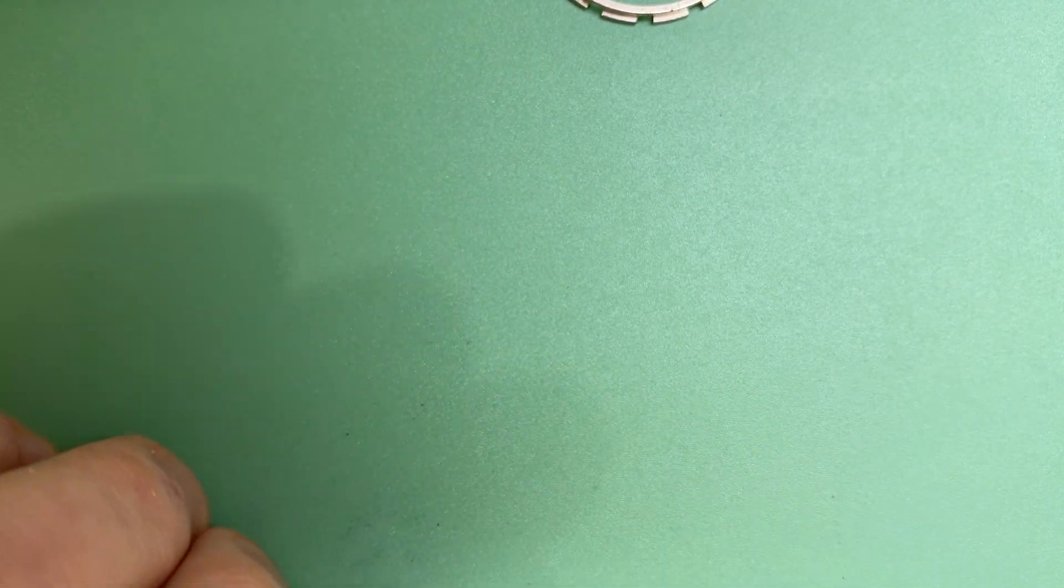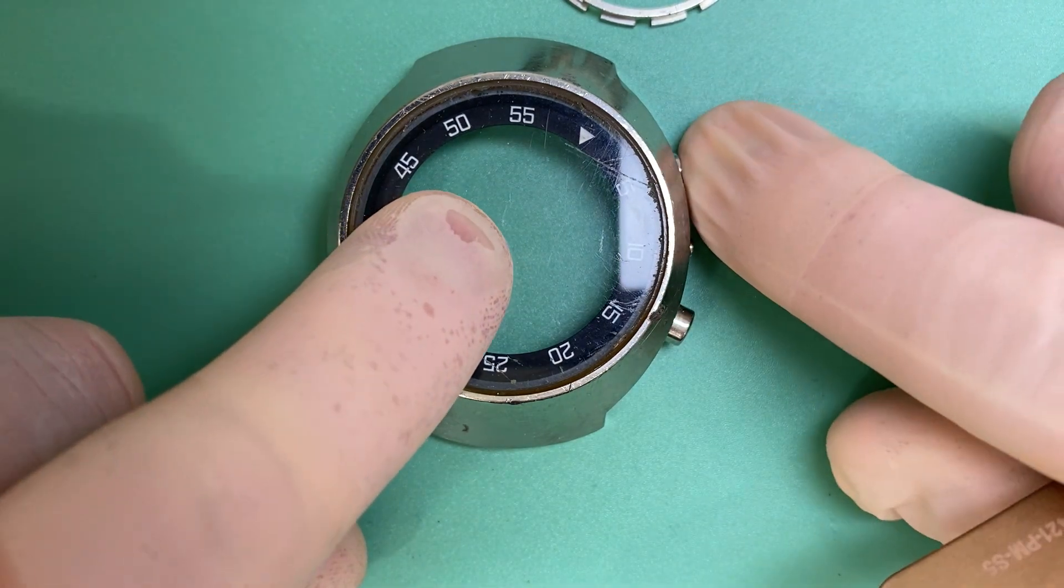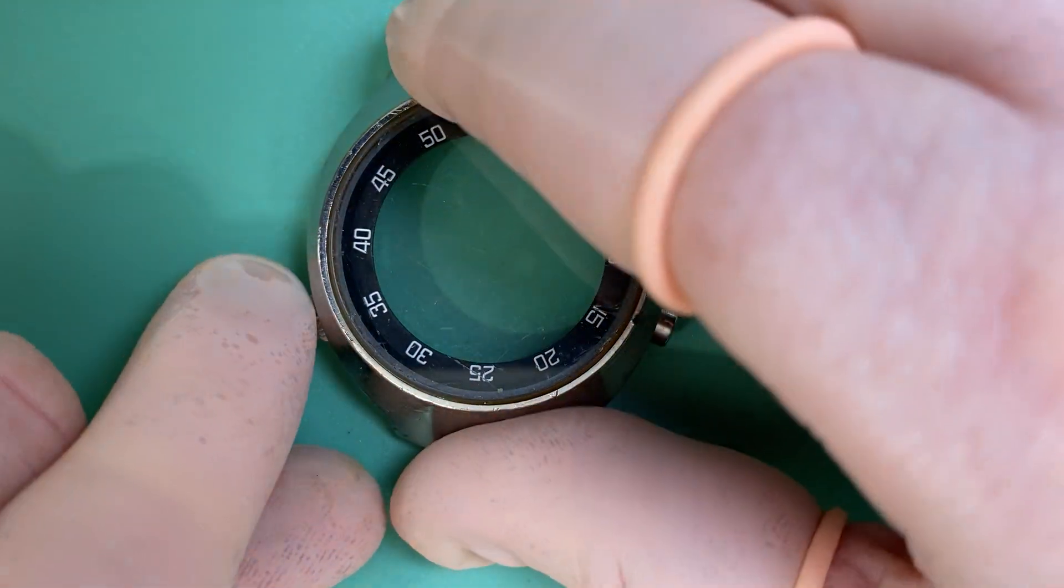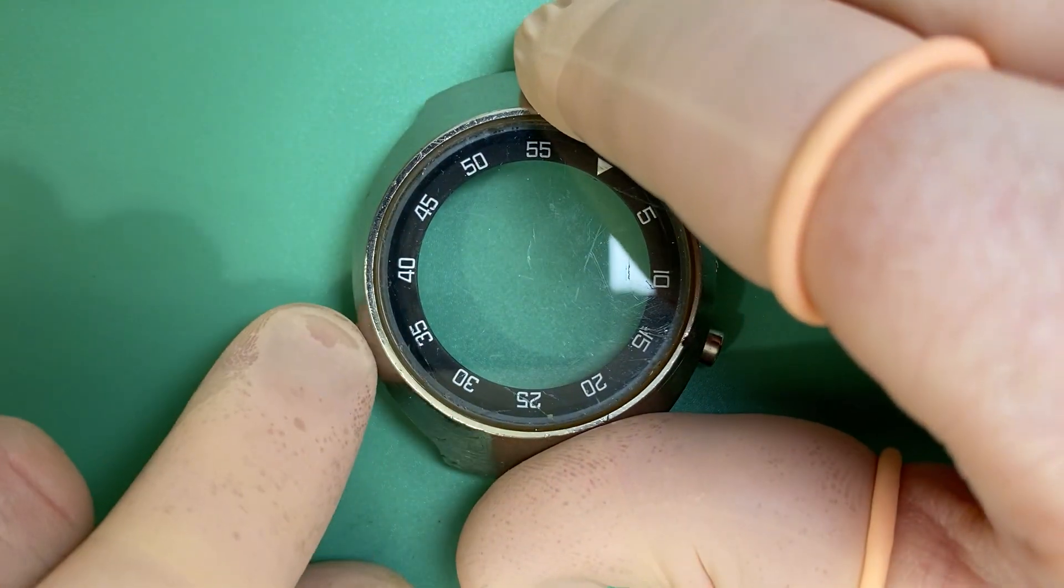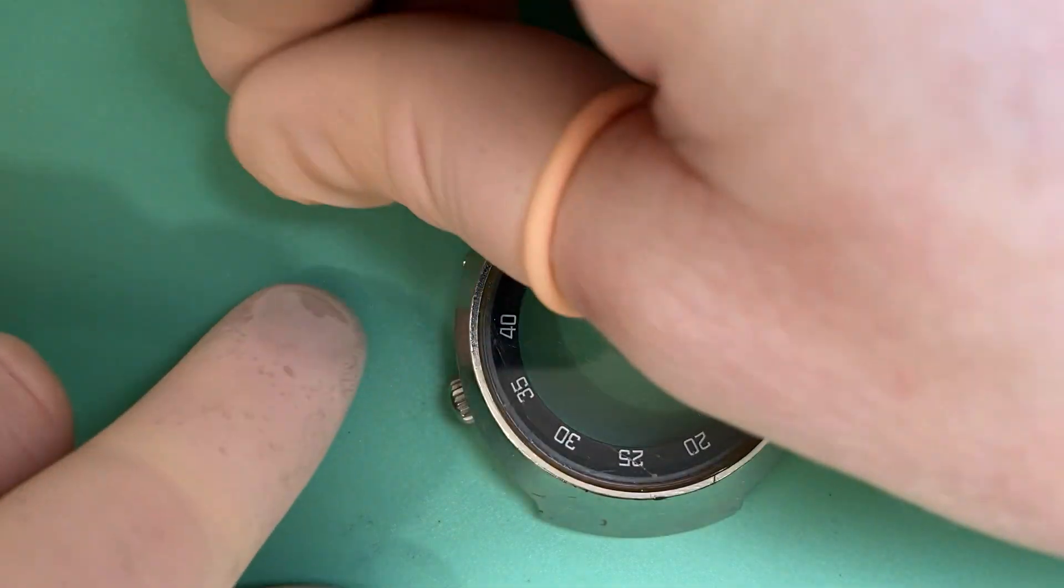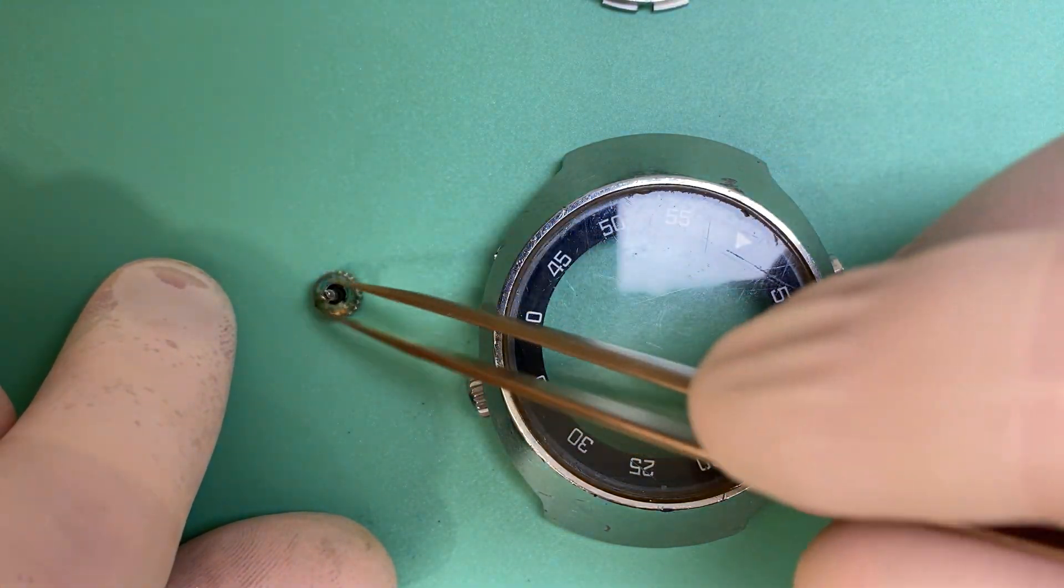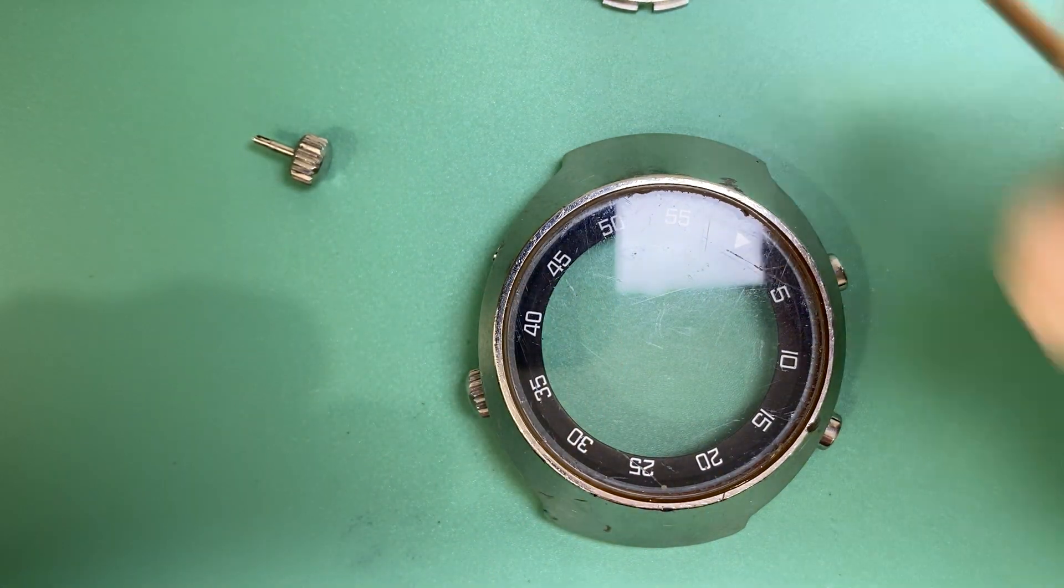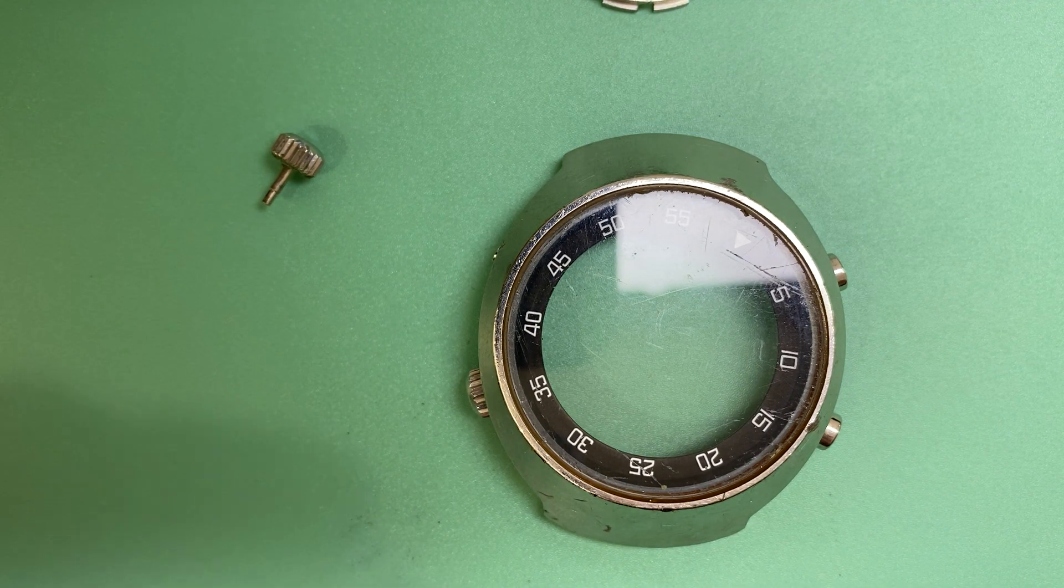Now, the watch has its regular chronograph pushers here. Start, stop, and we have our regular crown that goes through here. We have an inner rotating bezel via this crown, and then we have another crown here, which turns and rotates our 24-hour hand, or our second time zone hand. So when we turn that crown, our second time zone hand moves.